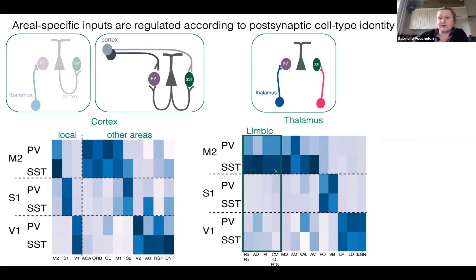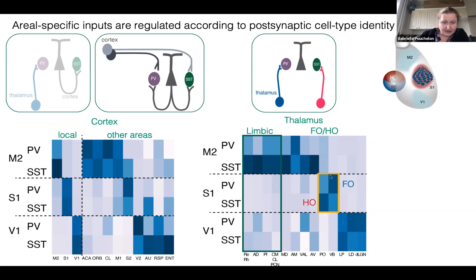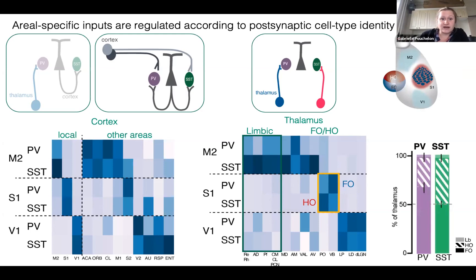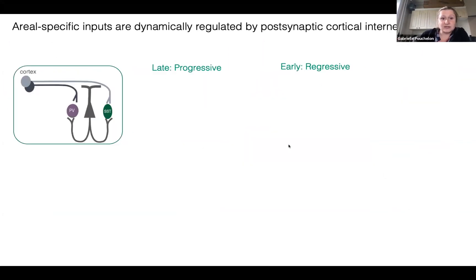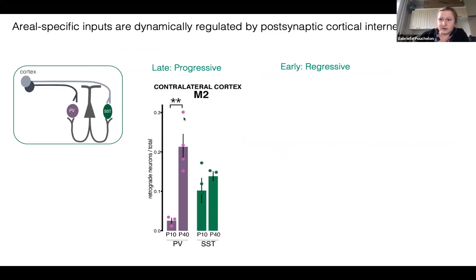When we classify thalamic neurons based on function, we have first-order and higher-order thalamic inputs, which have distinct profiles of projection in the cortex. Within S1, they differentially integrate onto PV and SST: PV receives more first-order type inputs from the thalamus, while SST has a balance of the two. This suggests that PV and SST regulate the afferents coming into one area in different ways, confirmed by developmental data showing different dynamics in how they regulate a common input.